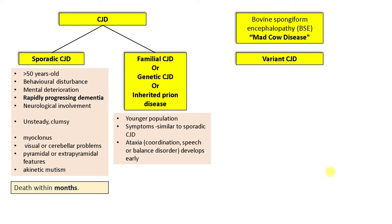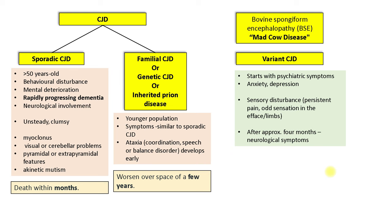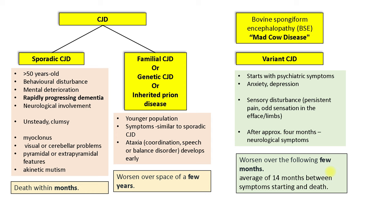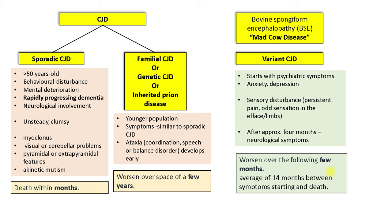Familial CJD usually presents with signs and symptoms similar to sporadic CJD, but in a much younger population. The life expectancy is usually a few years from diagnosis. Variant CJD tends to present with sensory disturbances and psychiatric symptoms like anxiety and depression. Neurological symptoms are manifested after a few months, with life expectancy on average 14 months from diagnosis. Detailed early and late signs and symptoms are available on microregistrar.com.